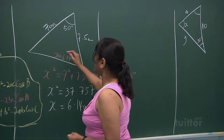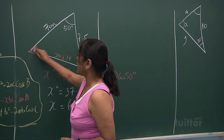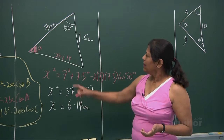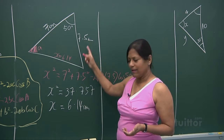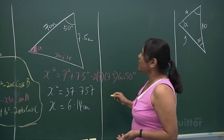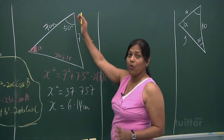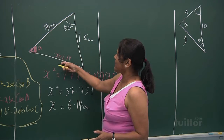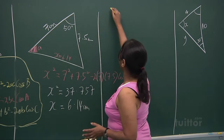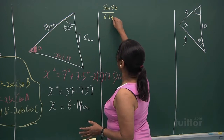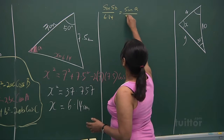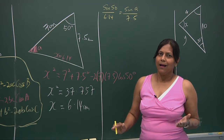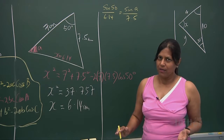Now if they ask for angle A, can we use cosine rule? We have all three sides so yes, but let's try sine rule first. We have the given pair: sine 50 degrees over 6.14. So sine 50 degrees over 6.14 equals sine A over 7.5. Is A going to be more than 50 degrees?